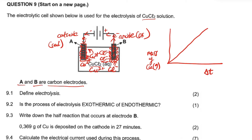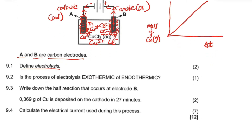Chlorine gas forms as bubbles at the anode electrode. Now, defining electrolysis: according to the exam guideline, it is a chemical process in which electrical energy is converted to chemical energy.